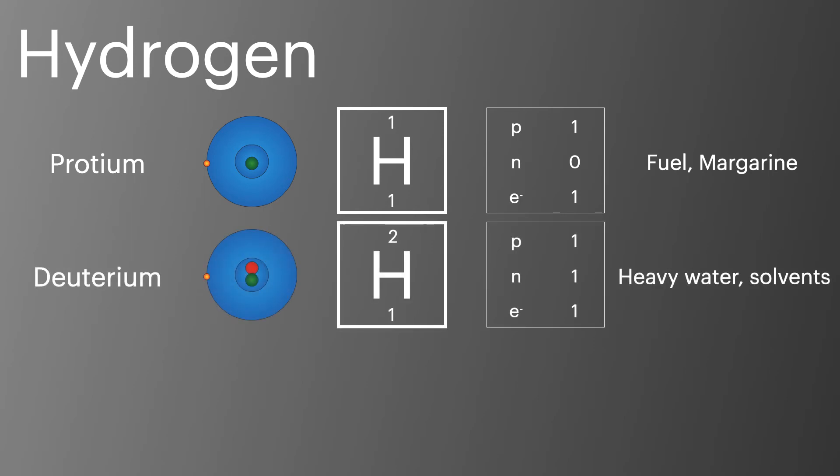Whilst you don't need to be able to recall any examples of isotopes, it can be helpful to have a few to hand. There are three common isotopes of hydrogen. Protium, which is a normal hydrogen containing only one proton. Deuterium, which contains one proton and now one neutron. And tritium, which contains one proton and two neutrons.